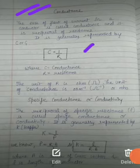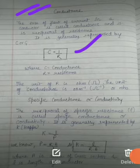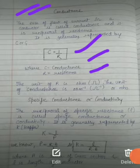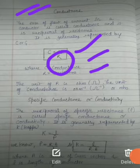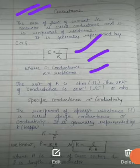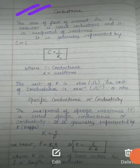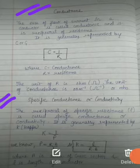Conductance is represented as C = 1/R, where C is the conductance and R is the resistance. The unit of resistance is ohm, as you know, so the unit of conductance will be ohm inverse, or we can say mho. So this is about conductance.